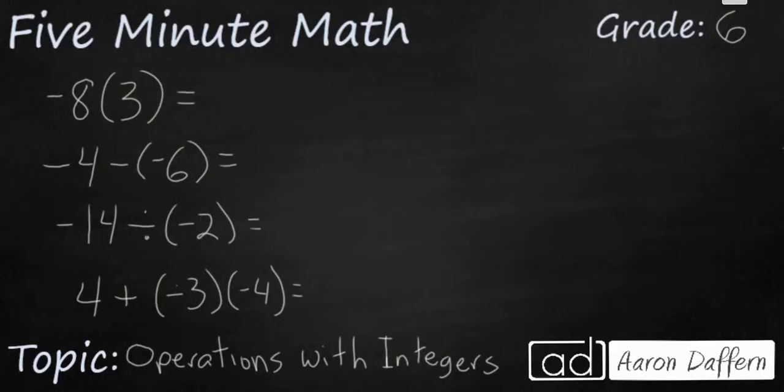This first one, eight times three is 24. We have a negative eight, positive three. That makes negative 24. Here we've got two negatives, so that makes it a positive. Negative four plus six actually makes positive two. You have a negative and negative. So it's going to cancel each other out to make a positive seven. And then these two negatives multiplied by each other make a positive. So four plus 12 is 16.